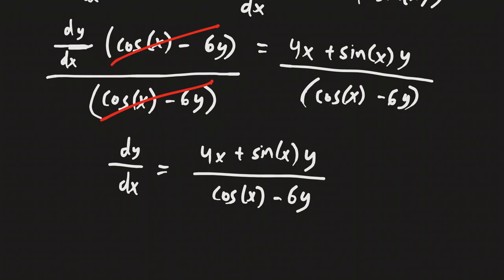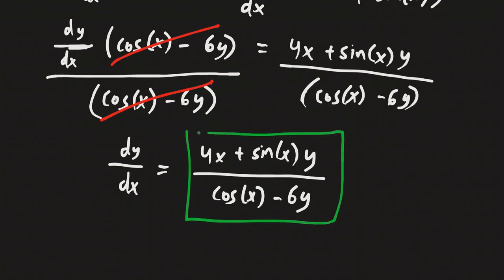And this becomes dy/dx equals 4x plus sine of x times y over cosine of x minus 6y. And that is your final answer.